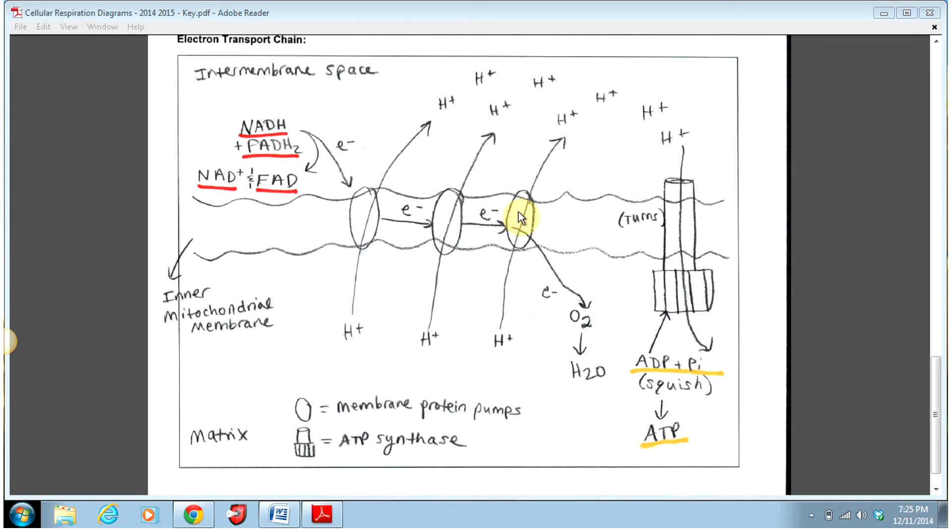These protein pumps are on the inner mitochondrial membrane, which are drawn as circles, and I have a little key down here as well. Those electrons get passed from protein pump to protein pump, and each of those proteins uses the energy from those electrons to pump H plus from the matrix on the very inside of the mitochondrion across the inner mitochondrial membrane to the intermembrane space, which is the space between the inner membrane and the outer membrane.